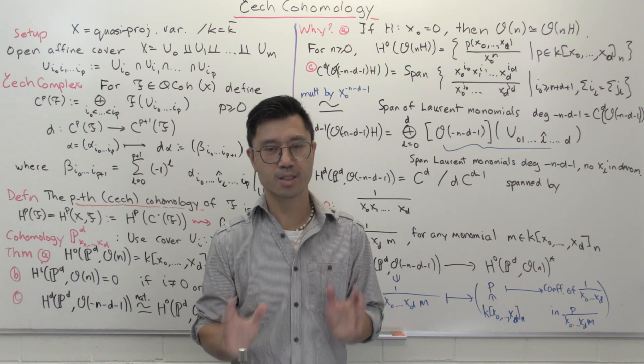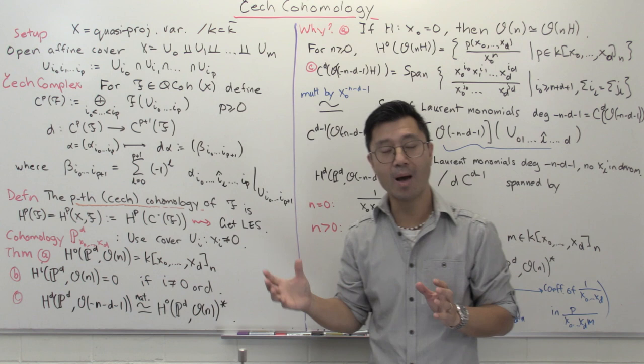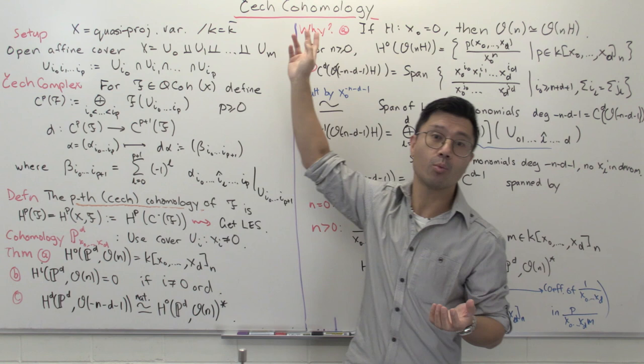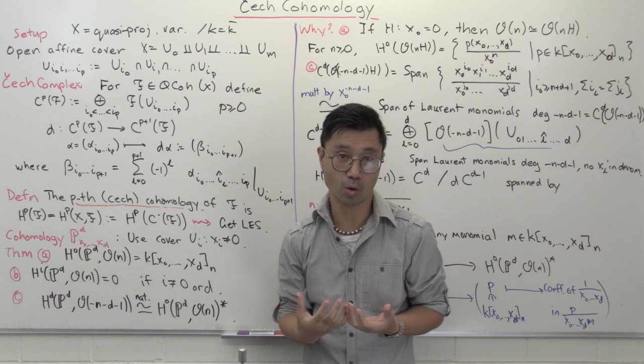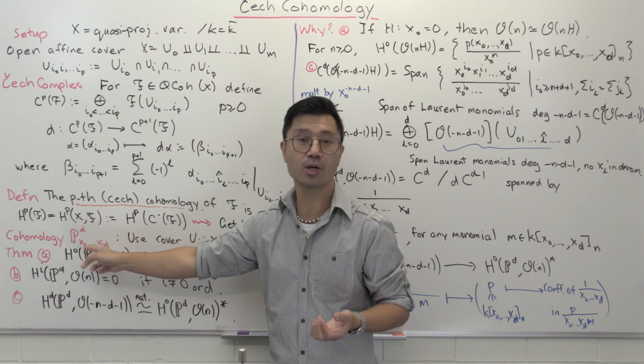Hi, I'm Daniel Chan from UNSW Sydney. Welcome to another adventure in Pure Mathematics. In this video, I want to talk about sheaf cohomology in dimensions greater than one. We'll set this up using Čech cohomology, which is a version of cohomology that is quite computable, and we'll use it to actually compute the cohomology of certain coherent sheaves on projective space.